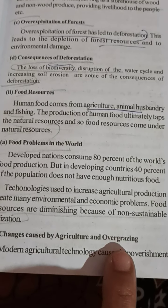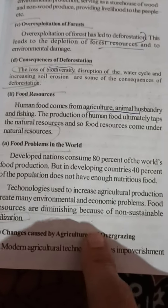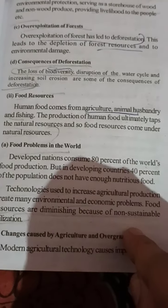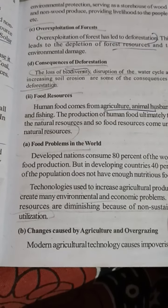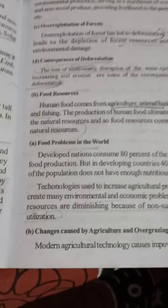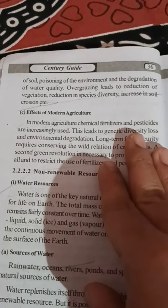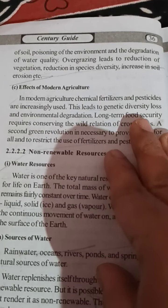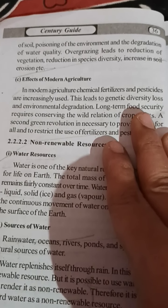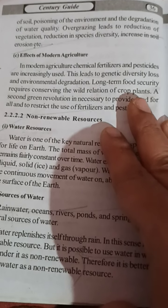Technology used to increase agricultural production creates many environmental and economic issues. Food resources are diminishing because of over-exploitation of nature. Modern agriculture technology creates impoverishment of soil, poisoning of the environment, and degradation of water quality. Overgrazing also leads to reduction of vegetation, reduction in species diversity, and increase in soil erosion.